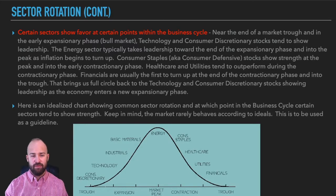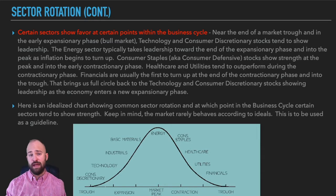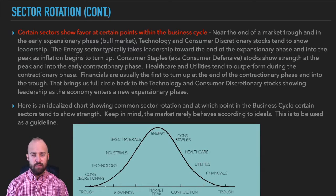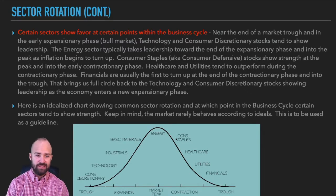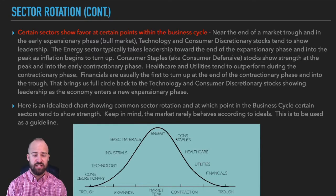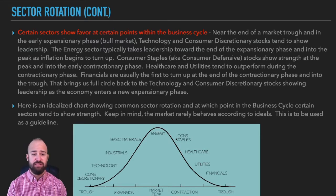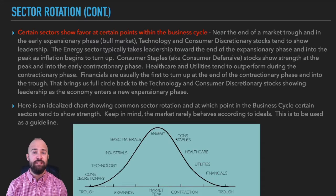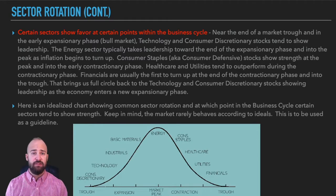Looking at the graph here, we have the business cycle along the x-axis: trough, expansion, market peak, contraction, and coming full cycle back to another trough. What we have are the sectors of the market likely to show leadership at various points along the business cycle. When first coming out of the trough into the early expansionary phase, you tend to see consumer discretionary and technology stocks leading the way higher. In the later expansionary phase, you start to see leadership by industrials and basic materials. Finally, at a market peak, you tend to see energy and consumer staples leading, as it rolls over into the early contractionary phase. After that, you get healthcare and utilities leading, followed by financials, which brings us full cycle back to another trough.